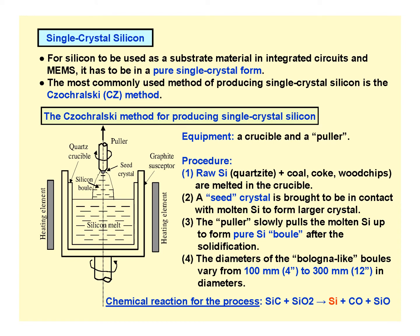In general, silicon is available in the form of raw silicon, which is a combination of quartzite, coal, oak, and wood chips — essentially in a sand-like raw form. For silicon to be used as a substrate, it must be in the form of a pure single crystal, and for that we use the Czochralski process.